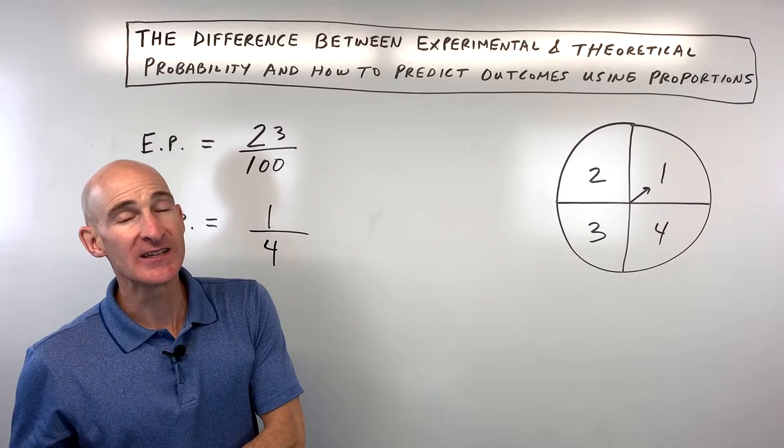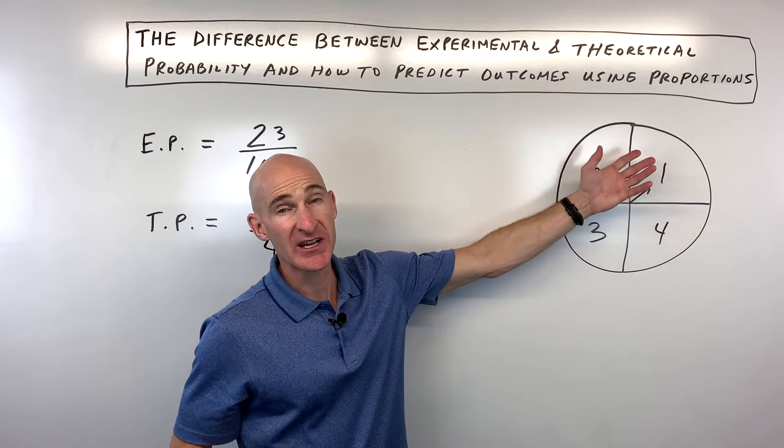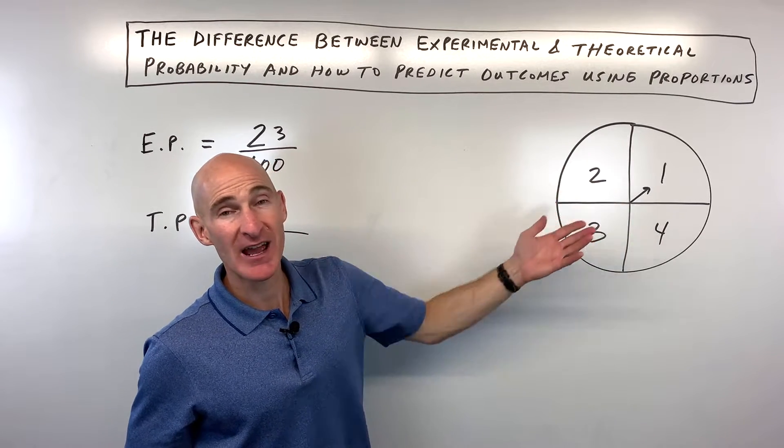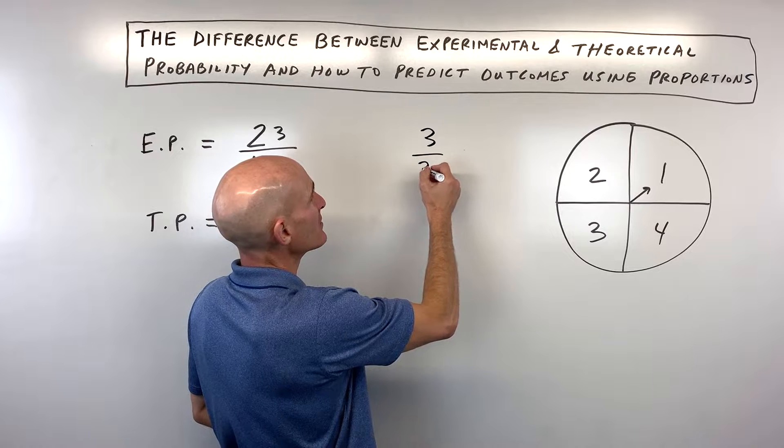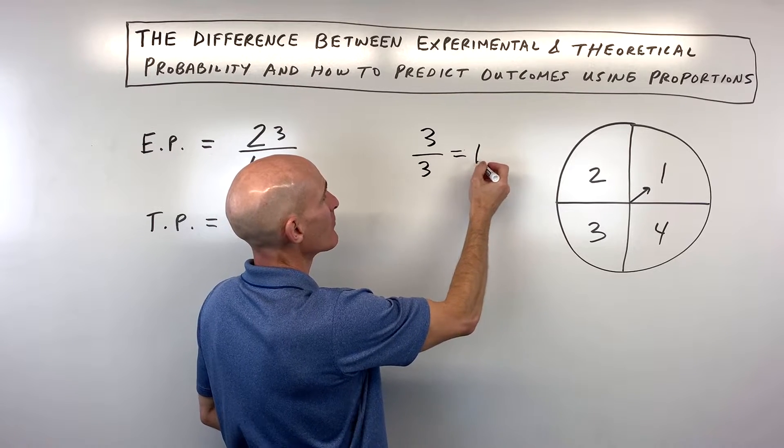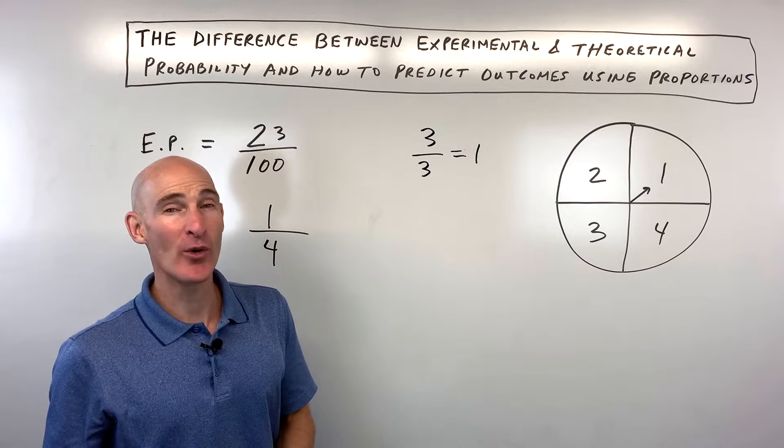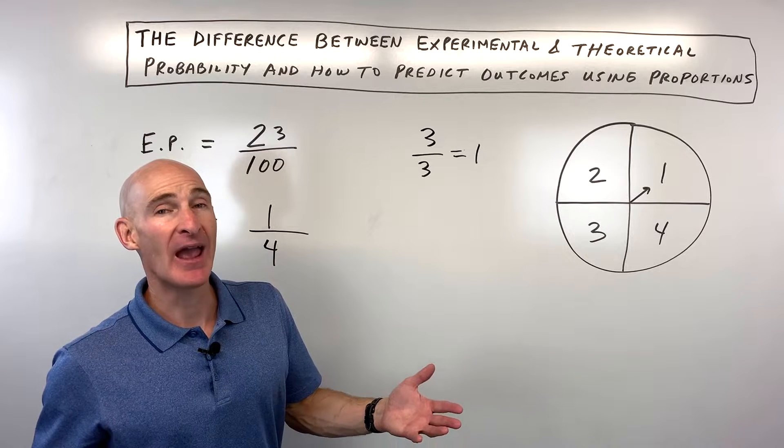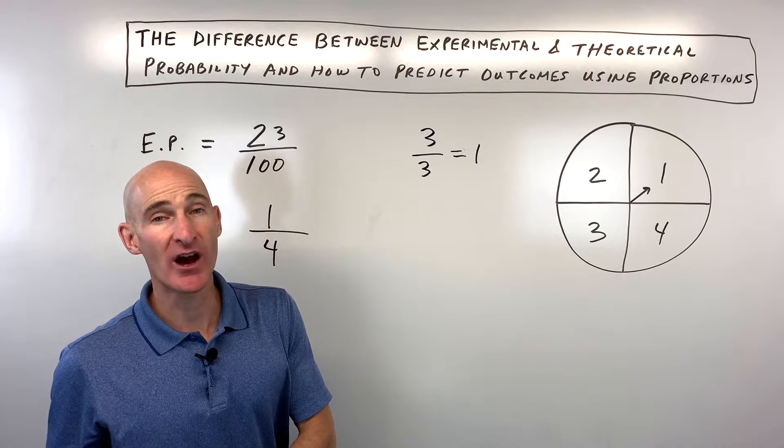Now, what's interesting is, say we only spun the spinner like three times. It's quite possible it could land on one three times in a row. You run an experiment, you say, oh, I got three ones and three spins. And so my probability is one, meaning it's 100%, meaning it always happens, which was only three spins, right? So it's probably not very accurate, not very reflective of what the actual probabilities are.